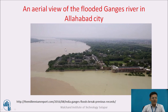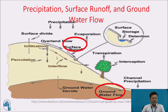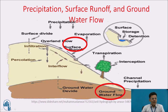This is an aerial view of the flooded Ganges in Allahabad city. This particular figure shows you the process of precipitation, surface runoff, and groundwater flow, to which we are quite familiar. When it rains, some flow infiltrates, some water comes out as overland flow, some water again penetrates into soil and comes out as interflow, and ultimately we find a contribution of the surface water to the channel.